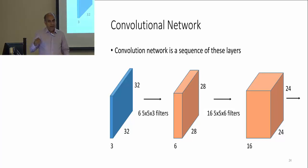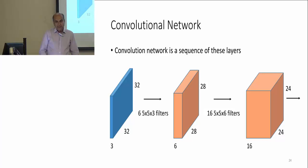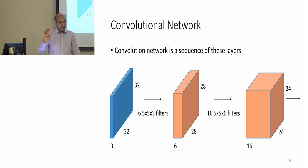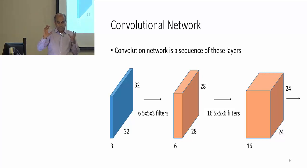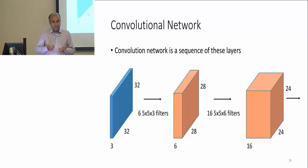At every step we apply a convolutional filter and move to the next layer with more filters. The key idea is that we learn what these filter weights should be — unlike before where we knew the derivative filter or Gaussian filter weights. The main thing we learn in a neural network is what those filters should be. That's called the learning process.